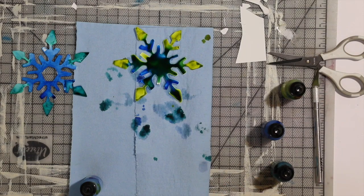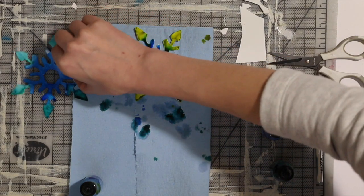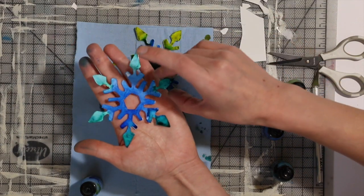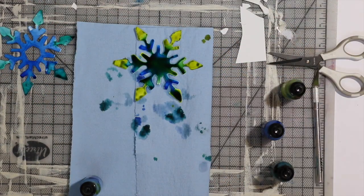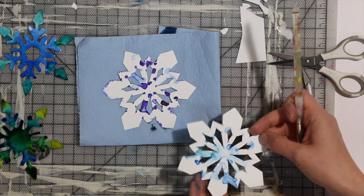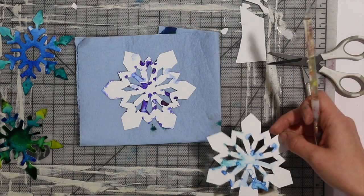When these are dry, I'll flip them over and add glitter on the back so that when you hang them they're double-sided. Actually, while these two are drying, I've got two that I made earlier and I'm going to flip those over and add the glitter to the back of these.